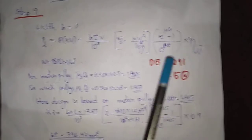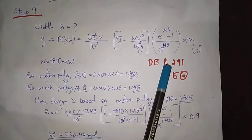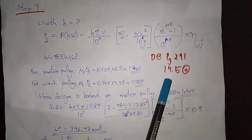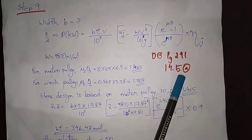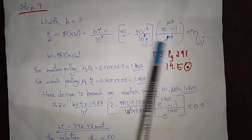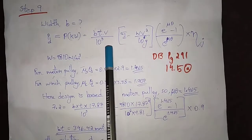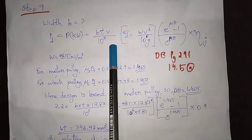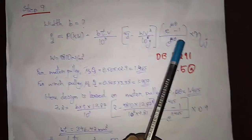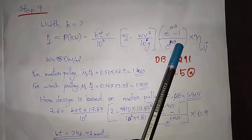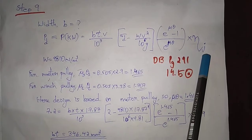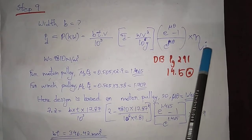Efficiency is noted. From the data book page 290, equation 14.5a — the same equation: b×t×v divided by 10 power 3, into e raised to mu×theta, into efficiency.